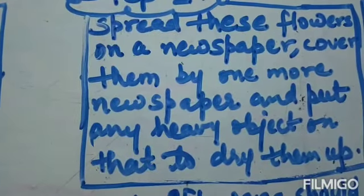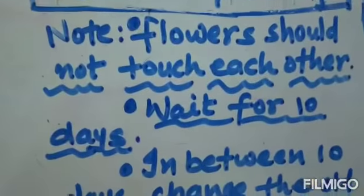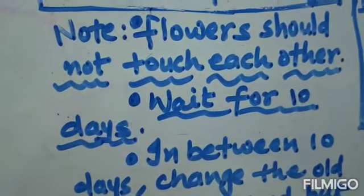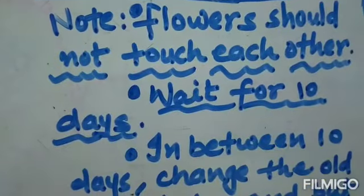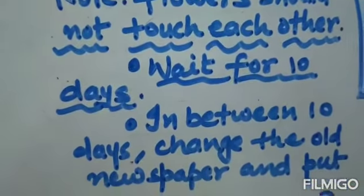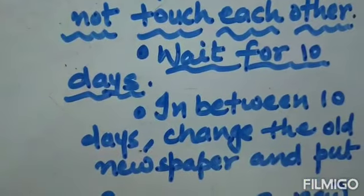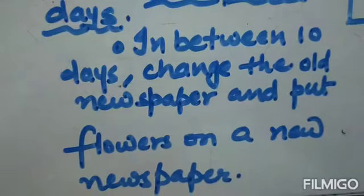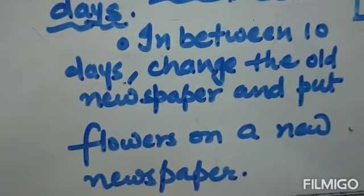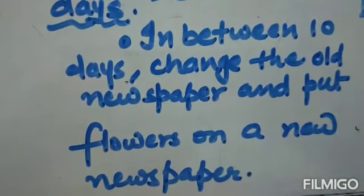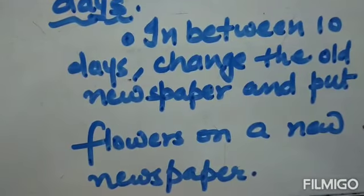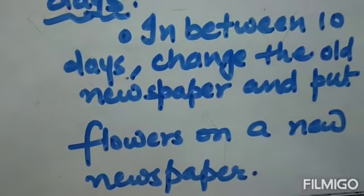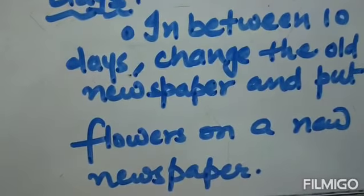Dear children, keep in mind that the flowers should not touch each other, and you have to wait for 10 days. Because flowers dry up very slowly — they contain water which will be dried very slowly. In between these 10 days, you have to change the newspaper, meaning replace the old newspaper with a new one for drying the flowers.